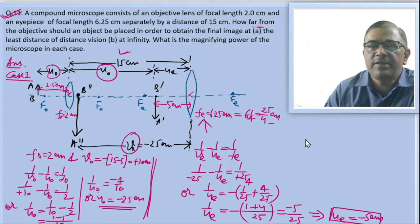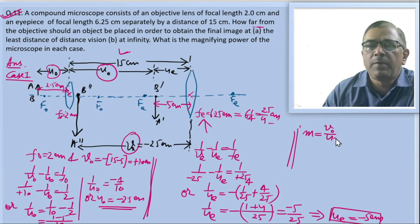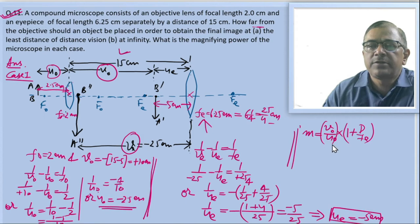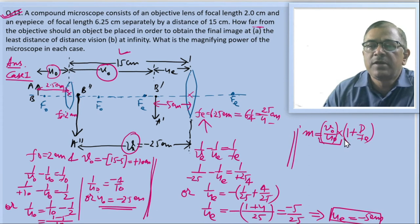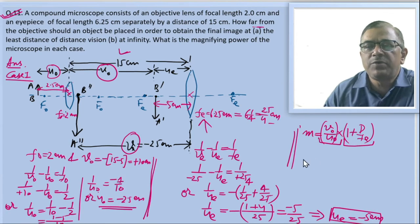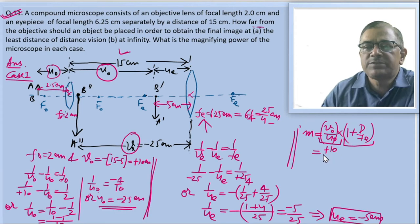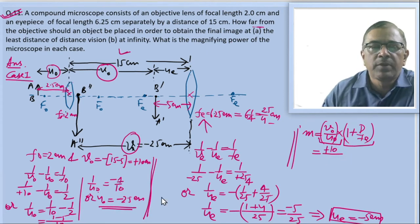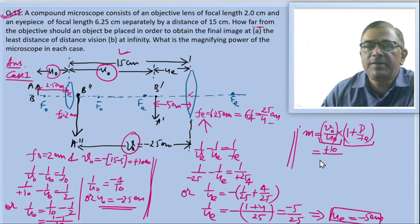Next, we calculate the magnification. The magnification for this case is given by the expression: m equals v_o by u_o multiplied by (1 plus D by f_e). The first component is the magnification of the objective lens, and the second part is the magnification of the eyepiece when the final image is formed at the least distance of distinct vision. So m equals m_o into m_e. Here v_o equals plus 10 and u_o equals minus 2.5.